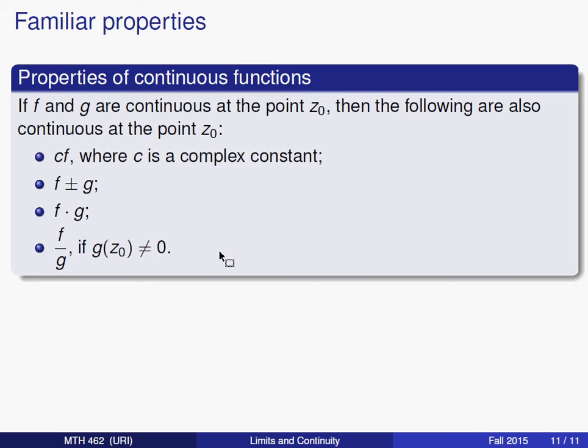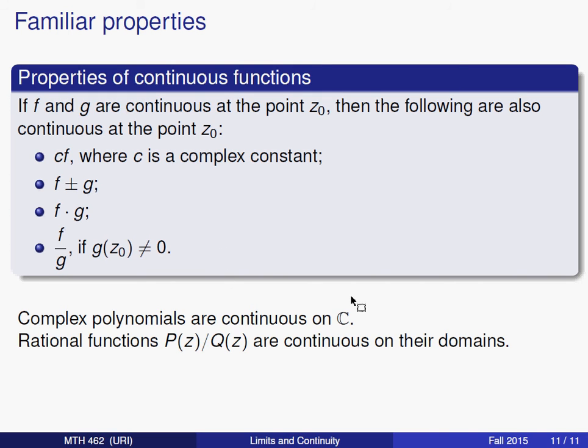From these we can deduce a couple more consequences. Complex polynomials—polynomials that are integer powers of z, positive and non-negative integer powers of z together with constant coefficients—they can be made up from these first two operations and actually the first three operations. Because of that they are continuous over the entire complex plane. Rational functions, which are just fractions with polynomials in the numerator and denominator, they will also be continuous provided that the bottom is defined. In other words they will be continuous on their domains, whatever their domains happen to be.